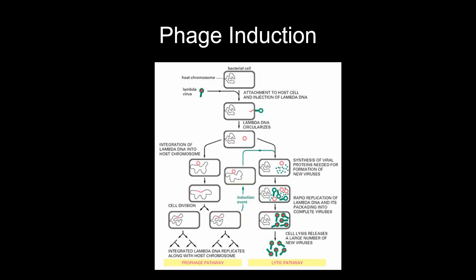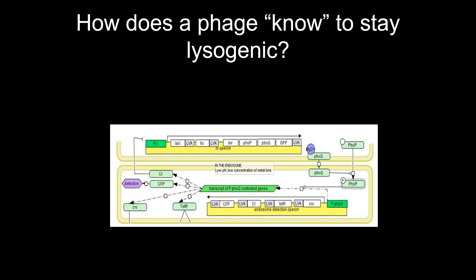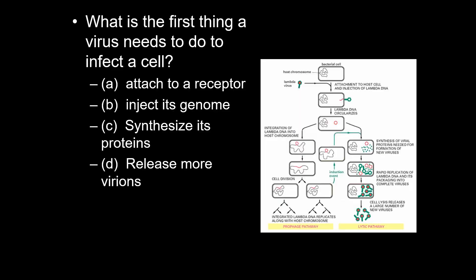Study figure 13.6 to understand the two things a virus can do inside a cell. You can do a lytic infection — an active, productive infection where you release a lot of virus — or a lysogenic infection, where you're not actively producing anything until phage induction occurs.